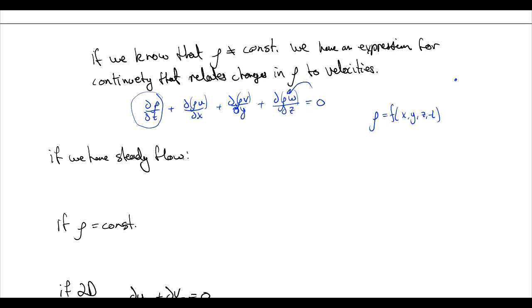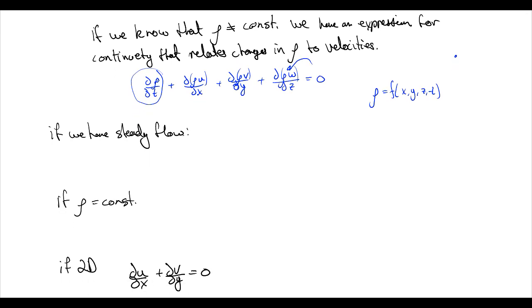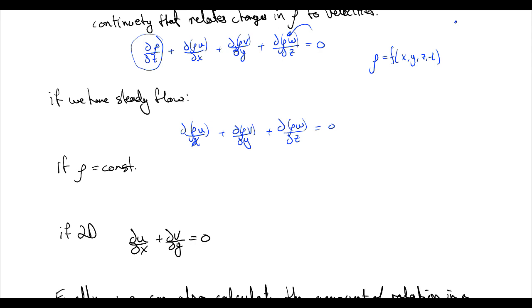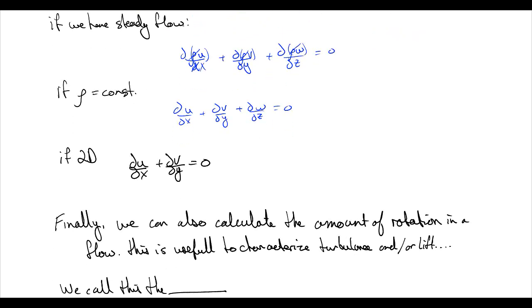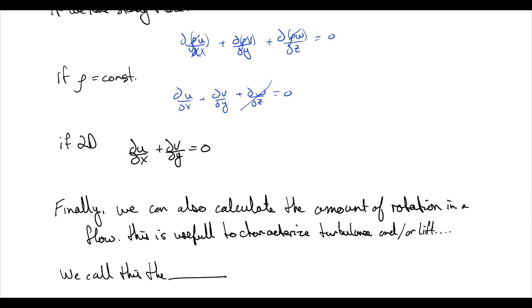We can simplify this though into ways that are easier for us to mathematically tackle. So if we have steady flow, this becomes d(rho u) with respect to x, plus d(rho v) with respect to y, plus the partial of rho w with respect to z. That again has to be equal to zero. And if density is equal to a constant, it comes out of these equations and cancels itself out. And we get the partial of u with respect to the partial of x, plus the partial of v with respect to y, plus the partial of w with respect to z is equal to zero. And again, if it's in 2D, we can cancel out the z component and we only get this.